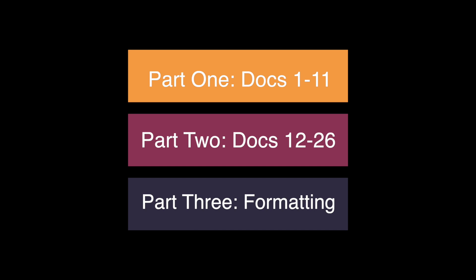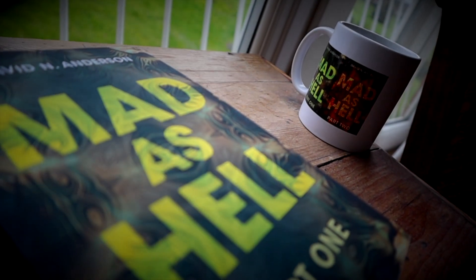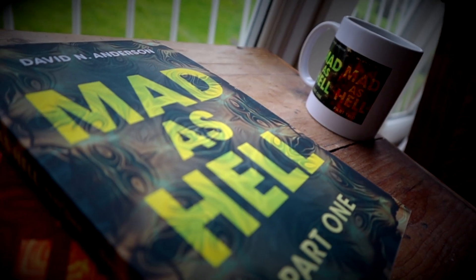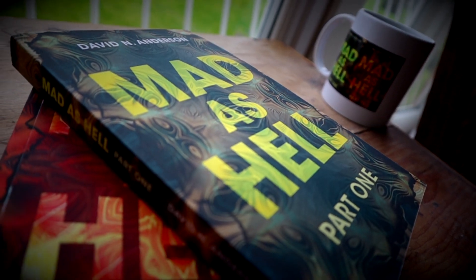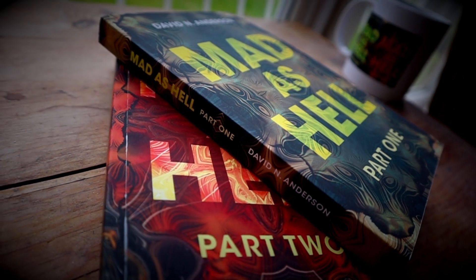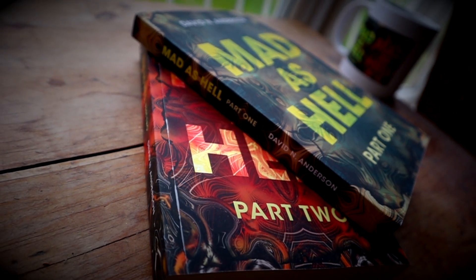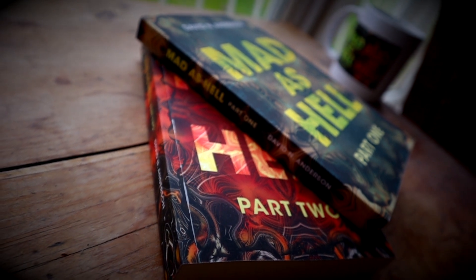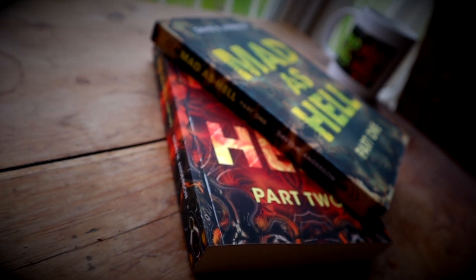Please see part two for points eleven to twenty, and part three for the final items and also the way the documents should be formatted and presented to your legal team. Please subscribe, and if you're interested in helping me you can buy the books on Amazon — they're titled 'Mad as How' parts one and two by David N. Anderson. I'm also setting up a Patreon account, so if you want to support me and help me produce more videos that'd be a great help. Thank you.